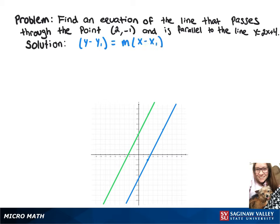Then we can sub in what we know, and we've got y minus negative 1 equals 2 times x minus 2.